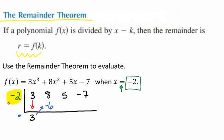Then, from there, we get to add 8 plus negative 6. We get a 2. And now we're going to multiply 2 times negative 2. And when we do that, that gives us a negative 4.